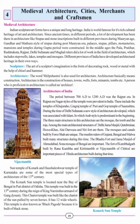The Sun Temple of Konark and Holeshwar Temple of Karnataka are some of the most special types of architecture of the 13th century. The Konark Sun Temple is located near the Bay of Bengal in Puri district of Odisha, and the Holeshwar Temple is in Karnataka state. Both represent the finest architectural traditions of their regions.